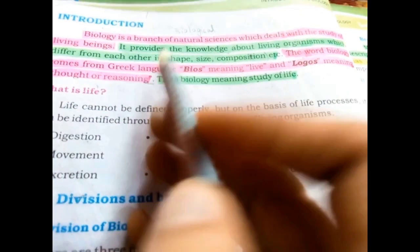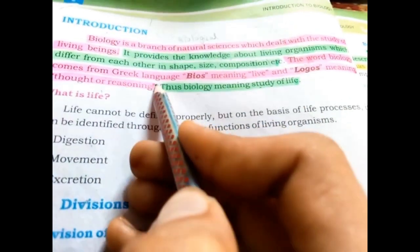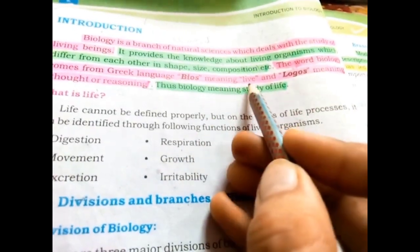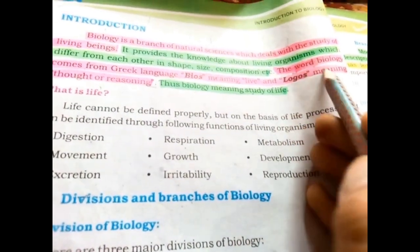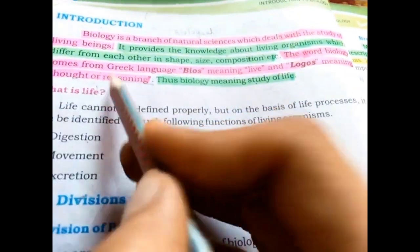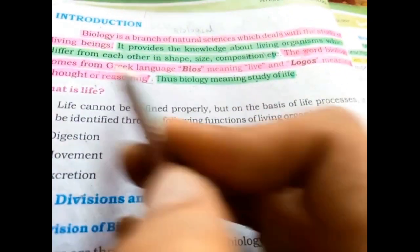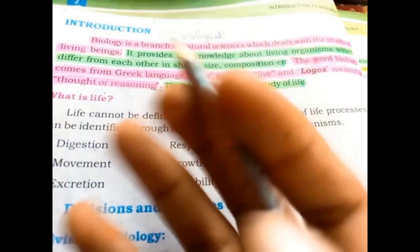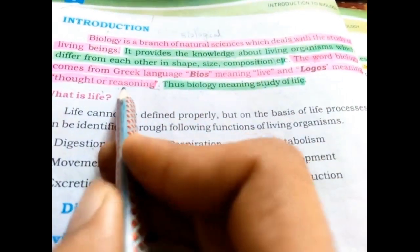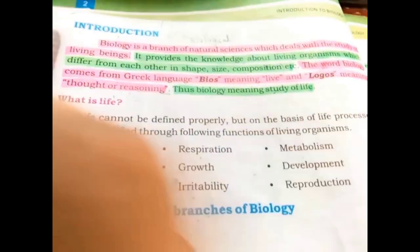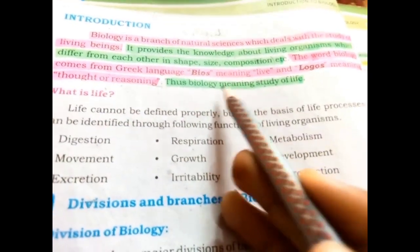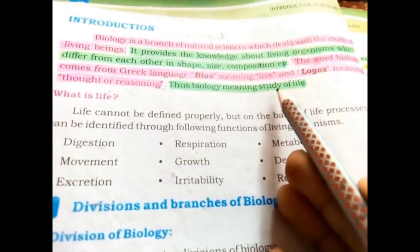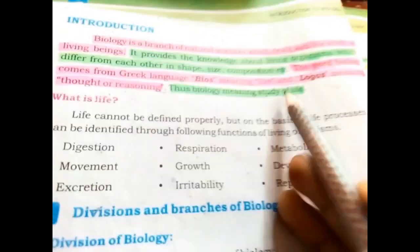The word biology comes from the Greek language. 'Bios' means living. The other word is 'logos', which means thoughts, reasoning, and study. This is why biology means the study of life — the study of living things.